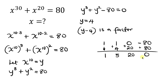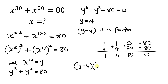So these are the coefficients of the other factor. The factors of this cubic equation are y minus 4 times a quadratic. Since these are just coefficients: the coefficient of y squared is 1, giving y squared; the coefficient of y is 5, giving plus 5y; and the constant term is plus 20. So the factored form gives us y minus 4 times y squared plus 5y plus 20, equal to 0.